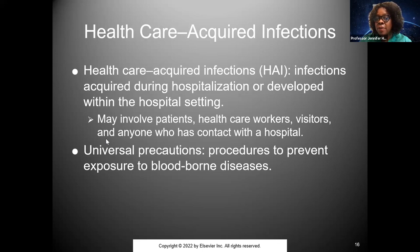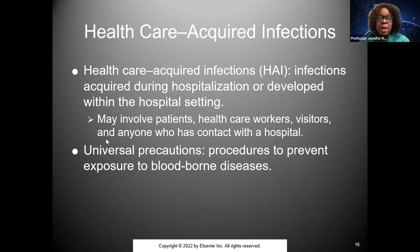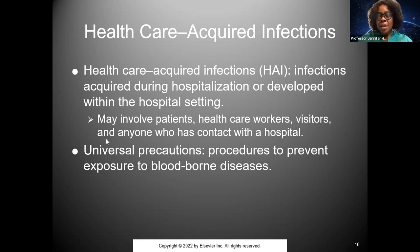Hospital-acquired infections (HAI) develop during hospitalization and can involve nurses, visitors, and patients. That's why we have universal precautions, and there are additional precautions for particular diseases such as airborne transmission. We definitely follow universal precautions at all times. That ends our Chapter 11 slides.